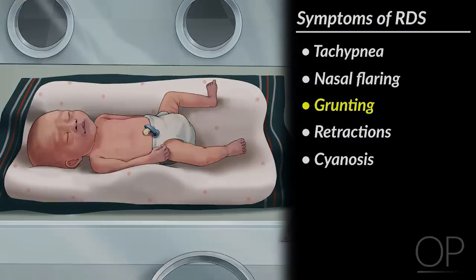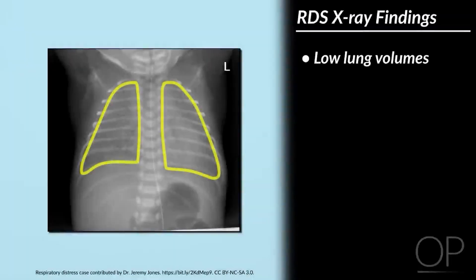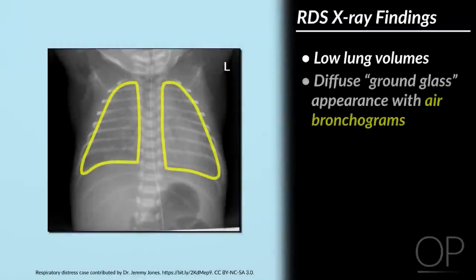Grunting helps to keep the alveoli open. Chest X-ray typically demonstrates low lung volumes as well as a classic diffuse ground glass appearance with air bronchograms.